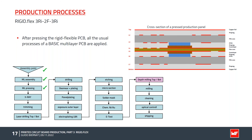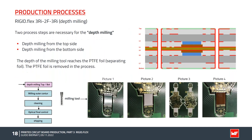An additional deep milling process is required before the standard contour milling. In picture one, we see the milling process with the milling tool. Pictures two and three show the exposed PTFE foil being removed (the white material). Picture four shows the flex area of the finished PCB. After deep milling, the last processes are: milling out the outer contour, cleaning, optical final inspection, and shipping.